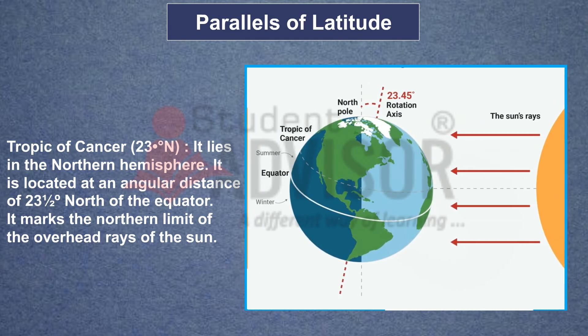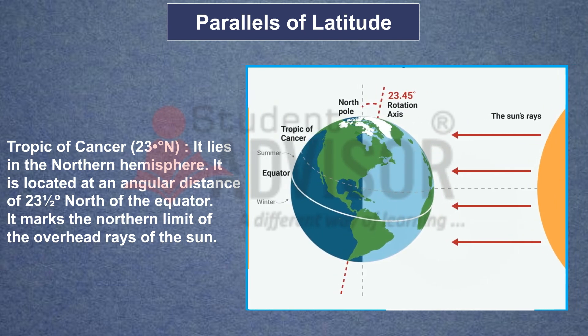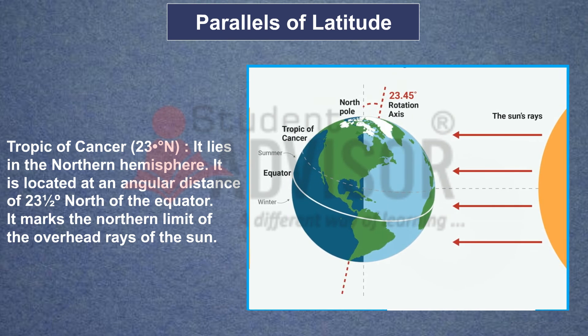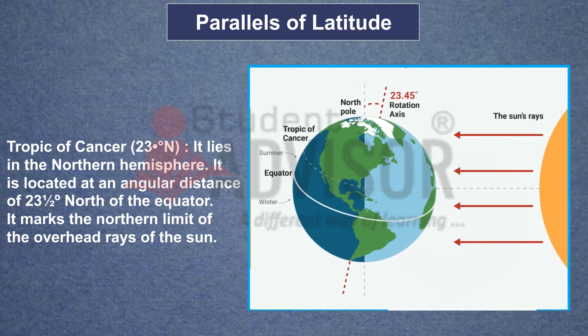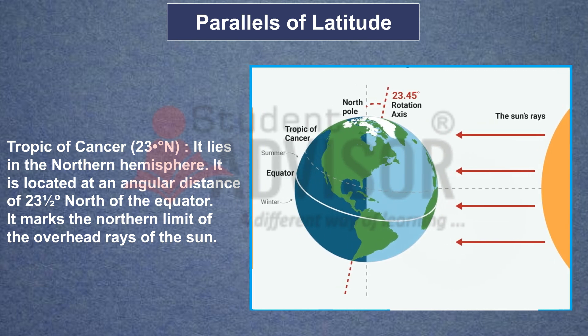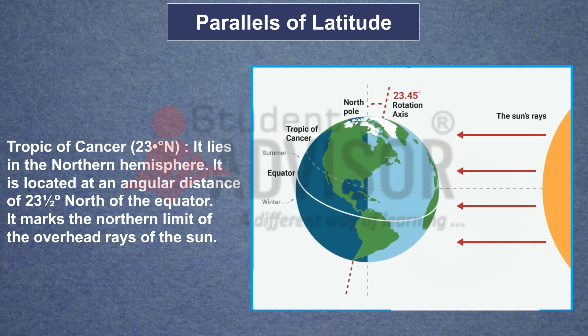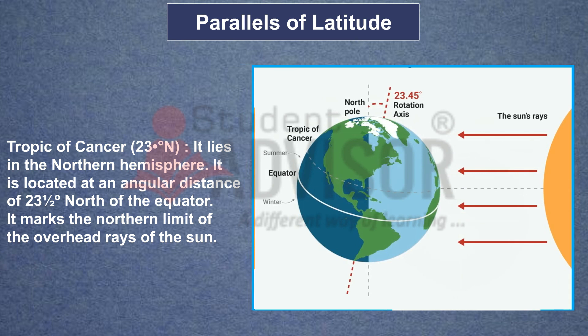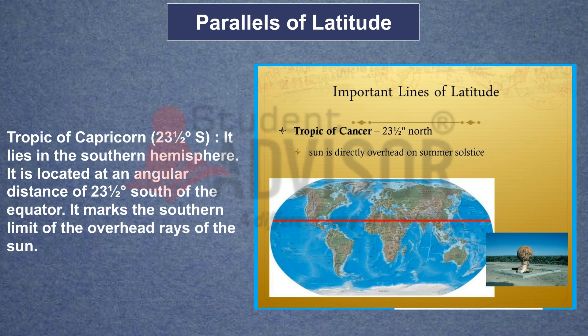Tropic of Cancer 23 degree north. It lies in the northern hemisphere. It is located at an angular distance of 23.5 degree north of the equator. It marks the northern limit of the overhead rays of the Sun.